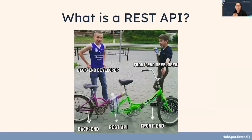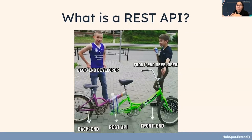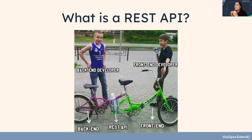So what is a REST API? This meme shows two people who put together a tandem bike. At the front-end we have a nice clean green bike, and on the back-end we have a purple bike that looks a little older and rustier. In between, to connect these two bikes, they use duct tape. We can think of our REST API as being that duct tape — it's going to connect our front-end and back-end together and keep them from falling apart.